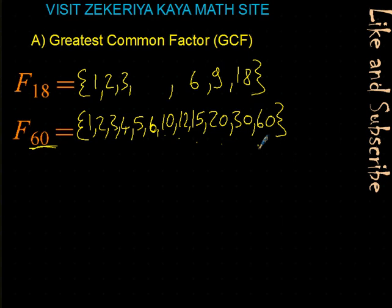From these factors of 18 and 60, which ones are common? 1 is common, 2 is common, 3 is common. 6 is also common. 9 — we don't have 9 in the factors of 60. 18 — we don't have 18 in the factors of 60 either. So the common factors are 1, 2, 3, and 6.